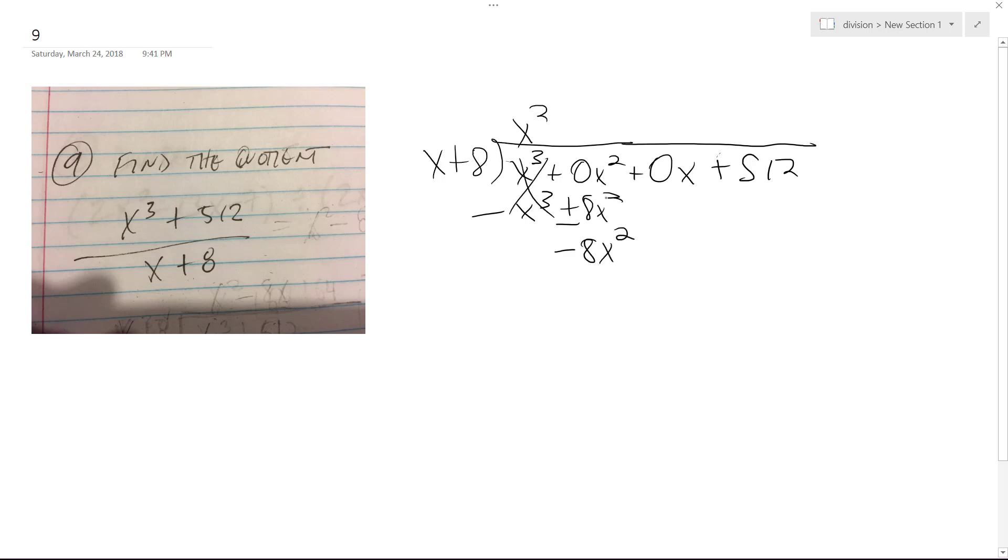How many times does x go into negative 8x squared? It goes negative 8x times, so we multiply that by x plus 8. Negative 8x squared, then minus 64x, switch the signs.